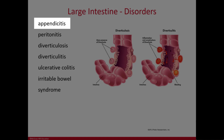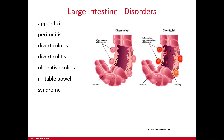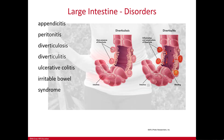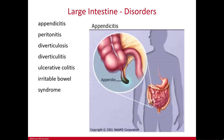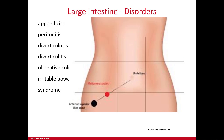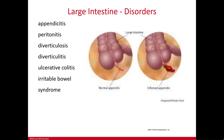Appendicitis is one of the most common causes of acute abdominal pain, usually presenting as right lower quadrant pain, since that's where the appendix is typically found. When you palpate the abdomen, tenderness over McBurney's point — about one-third of the distance between the anterior superior iliac crest and the umbilicus — is suggestive of appendicitis, though not 100% diagnostic.